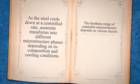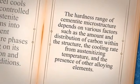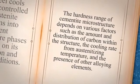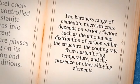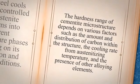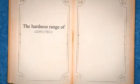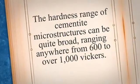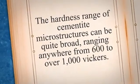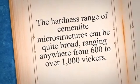The hardness of cementite microstructure depends on various factors such as the amount and distribution of carbon within the structure, the cooling rate from austenitizing temperature, and the presence of other alloying elements. The hardness range of cementite microstructures can be quite broad, ranging anywhere from 600 to over 1,000 Vickers.